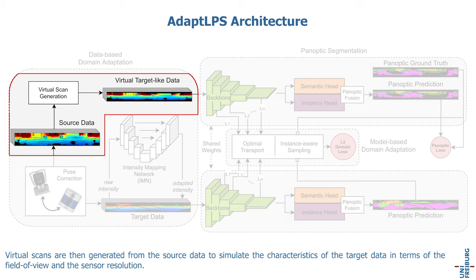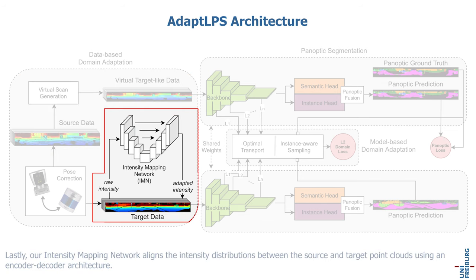Lastly, our intensity mapping network aligns the intensity distributions between the source and target point clouds using an encoder-decoder architecture.